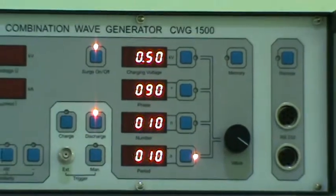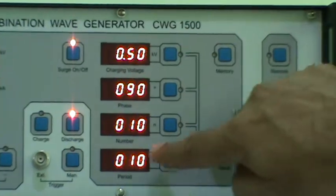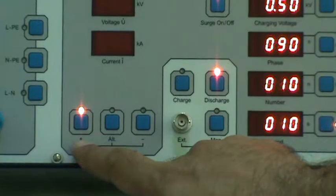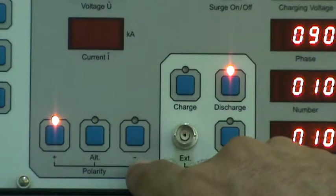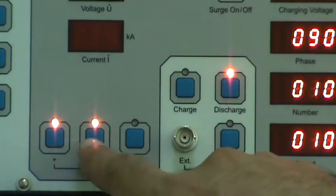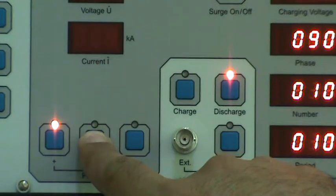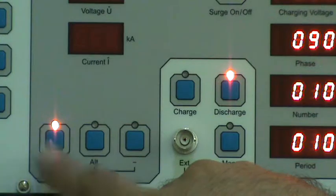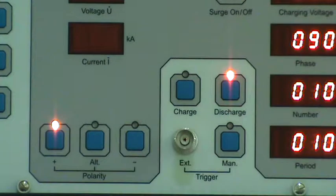After selecting these parameters we have to select the polarity of the surge. It can be either positive, negative or alternative. Now we are selecting only positive surge. So this LED is glowing for positive pulse mode.